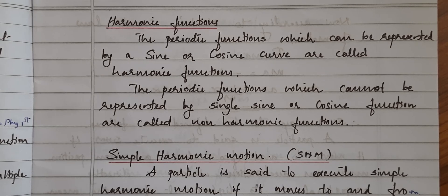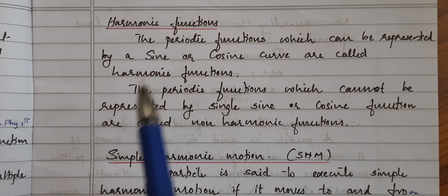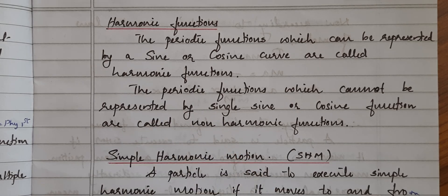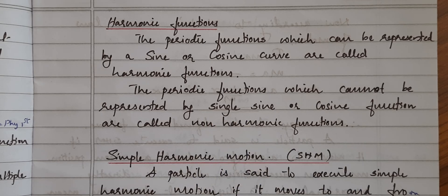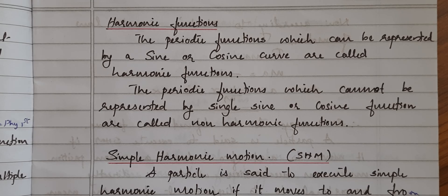Now we have a term called harmonic functions. Harmonic functions are represented by sine or cosine curves. If a function can be represented as a sine or cosine function, it is known as a harmonic function. If you cannot represent it with sine or cosine, we call it a non-harmonic function — it can still be periodic, but harmonic means it must be expressible as sine or cosine.